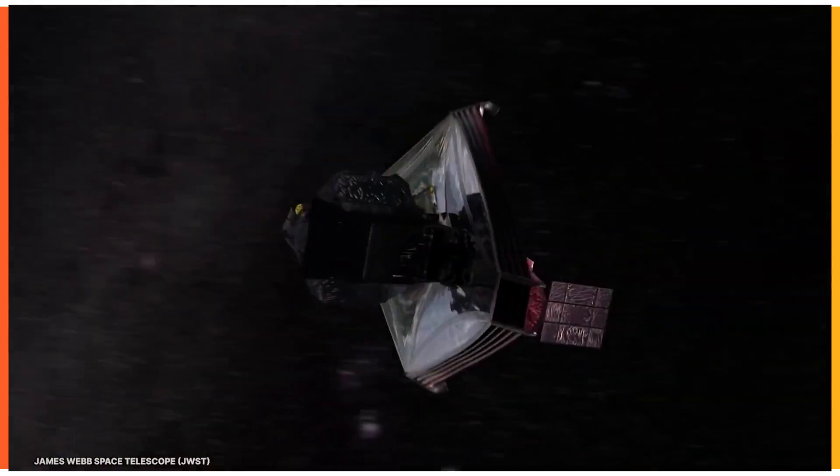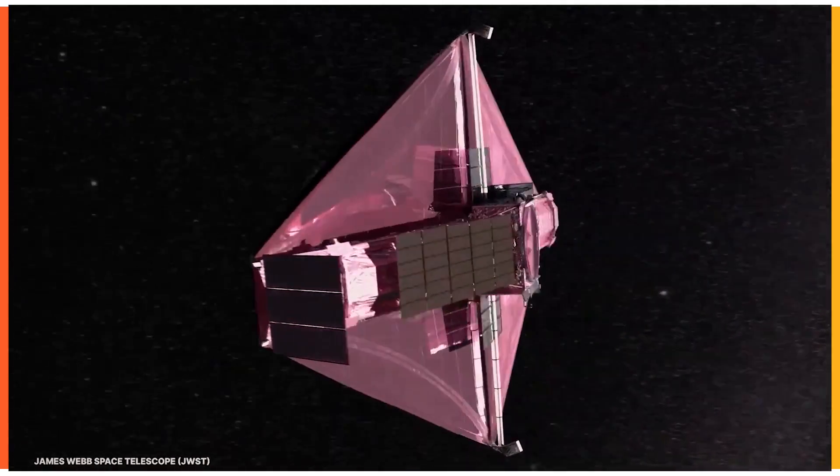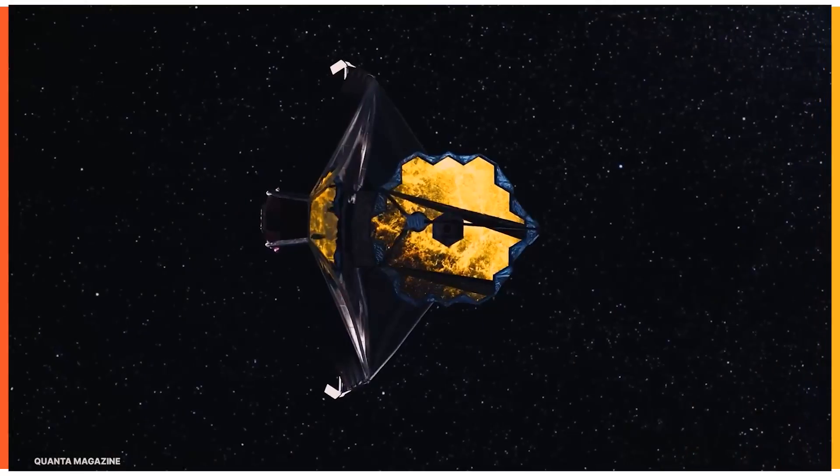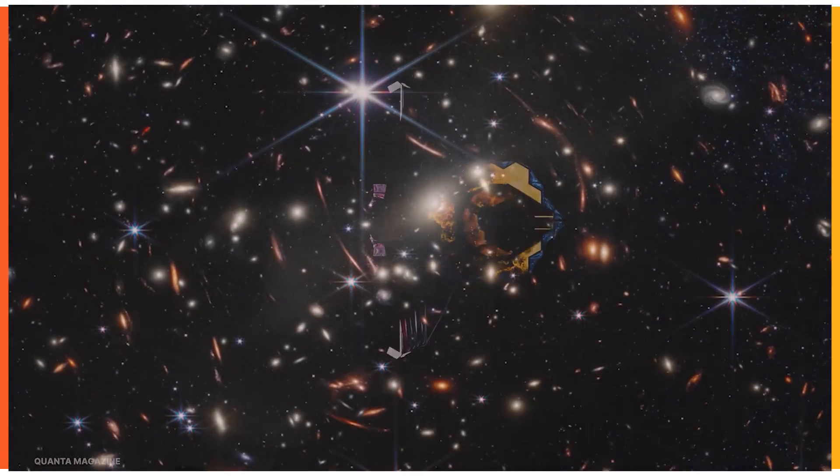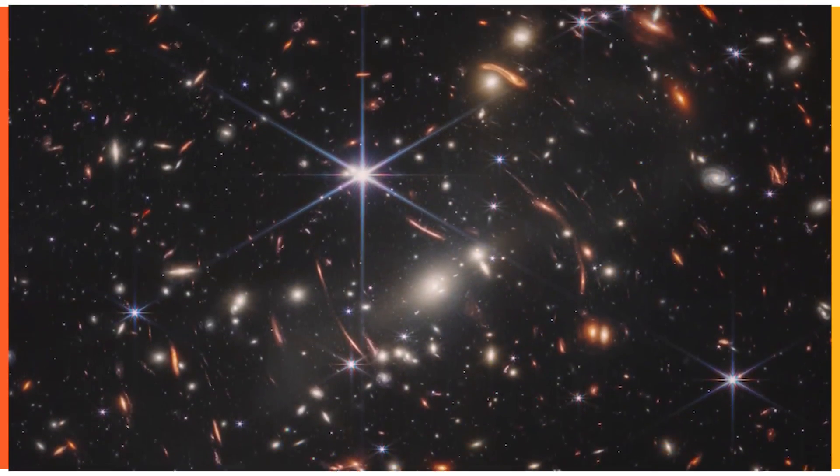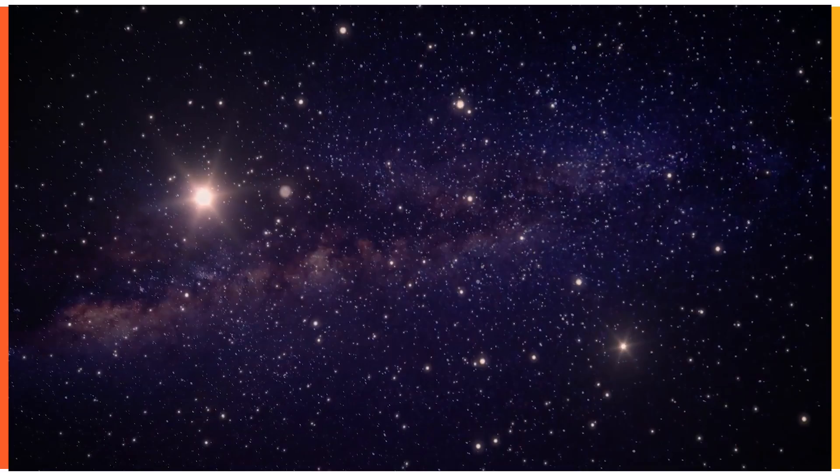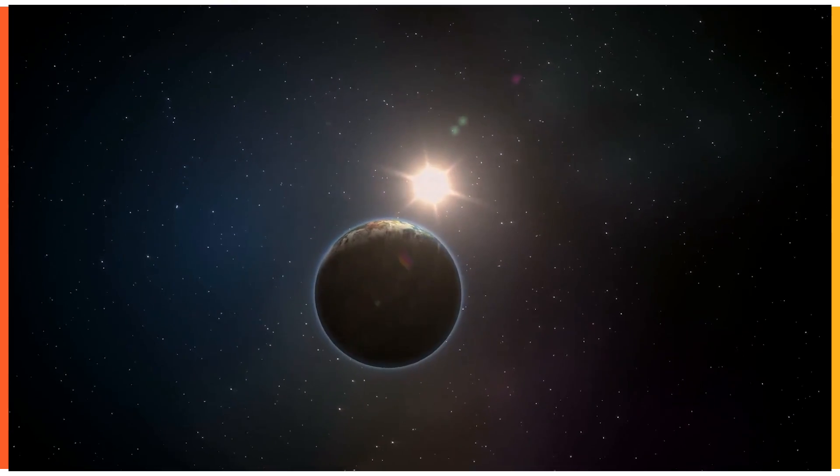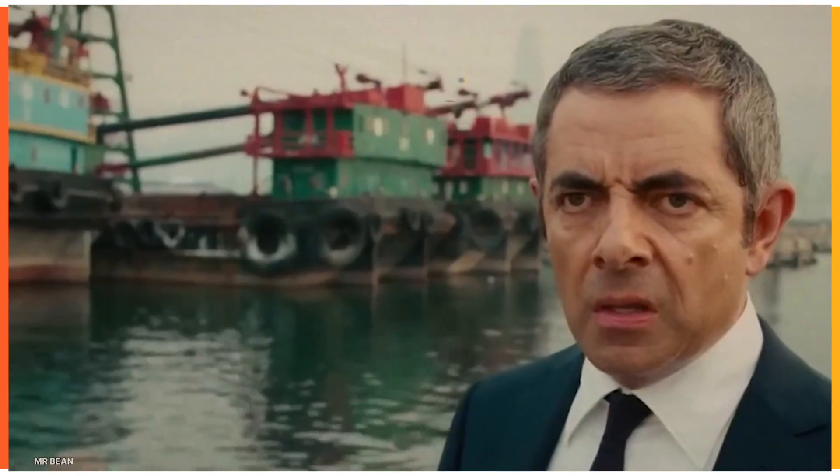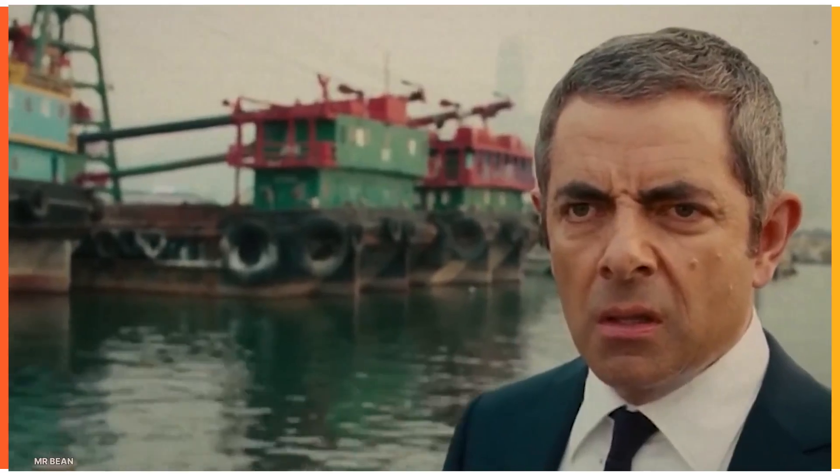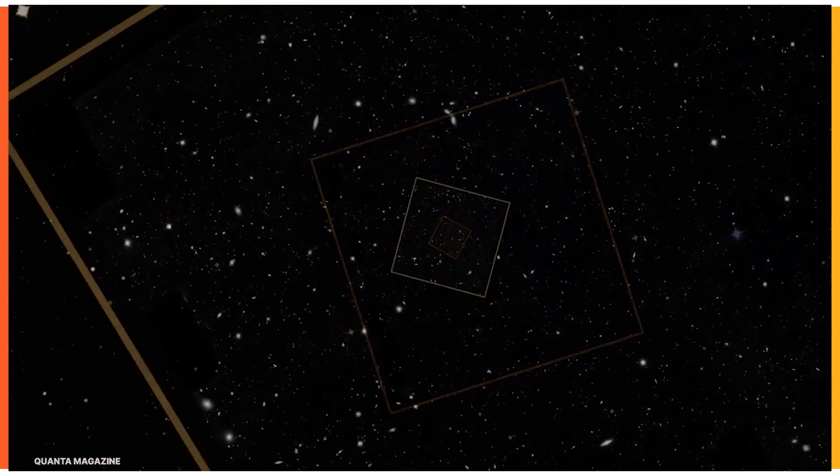After countless delays, James Webb promised to deliver, and so it did. The craziest thing about these images is that they're only a tiny part of our massive universe. It's a big reminder of how infinite space is, and how small we are by comparison. It's hard not to be a little taken aback. But with all that aside, let's take a look at these images, shall we?